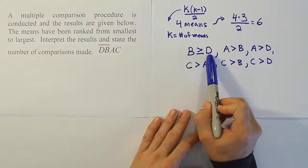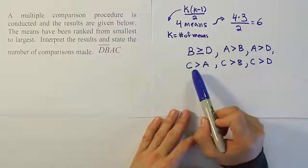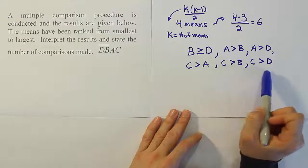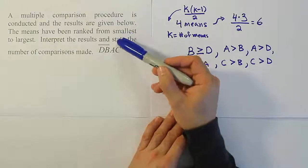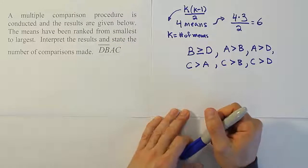So B is greater than or equal to D, A is greater than B, A is greater than D, and we can see that C is bigger than everyone else. C is bigger than A, it's bigger than B, and it's bigger than D. It's significantly bigger because it's not joined by a bar to anything else in the list. Okay, so that's it.